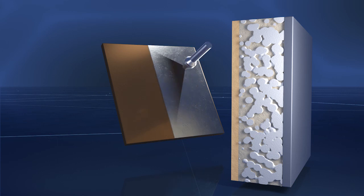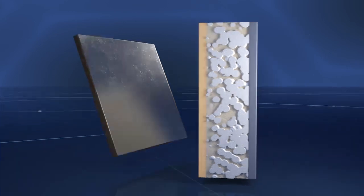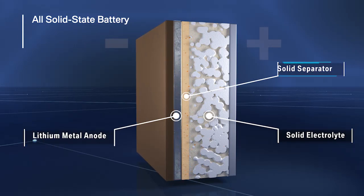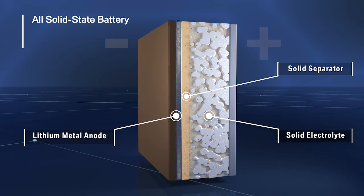A thin layer of lithium metal is employed as anode. During charging, metallic lithium is deposited on the anode and dissolved again during discharging.